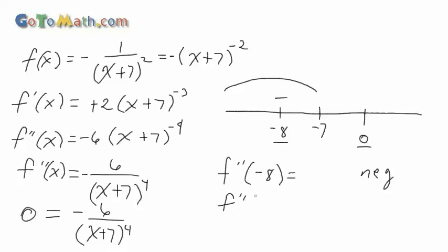We know that's concave down up to negative 7. And then we do f double prime of 0. Plug 0 in, and obviously we get negative again. So that's a negative number also. So we end up with, I'm like, where should I write this? I'll write it right here. Concave down from negative infinity to negative 7, union from negative 7 to infinity. Of course we cannot include negative 7.